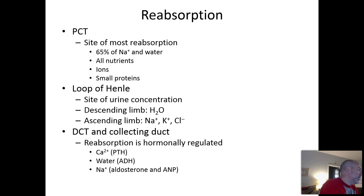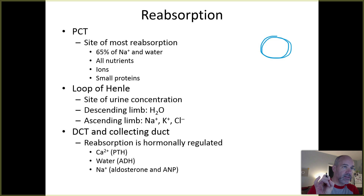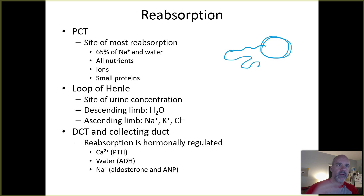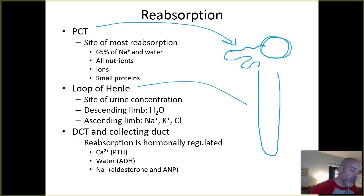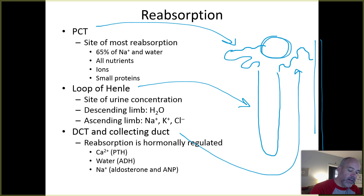Thinking about one of these nephron structures: you have your renal corpuscle, which consists of the glomerular capsule with the glomerulus inside. That leads to a proximal convoluted tubule — convoluted meaning it's wiggly — referred to as the PCT. That leads to the loop of Henle, or nephron loop, and then to a distal convoluted tubule, which also looks wiggly. Proximal means closer to the glomerulus; distal means further away.